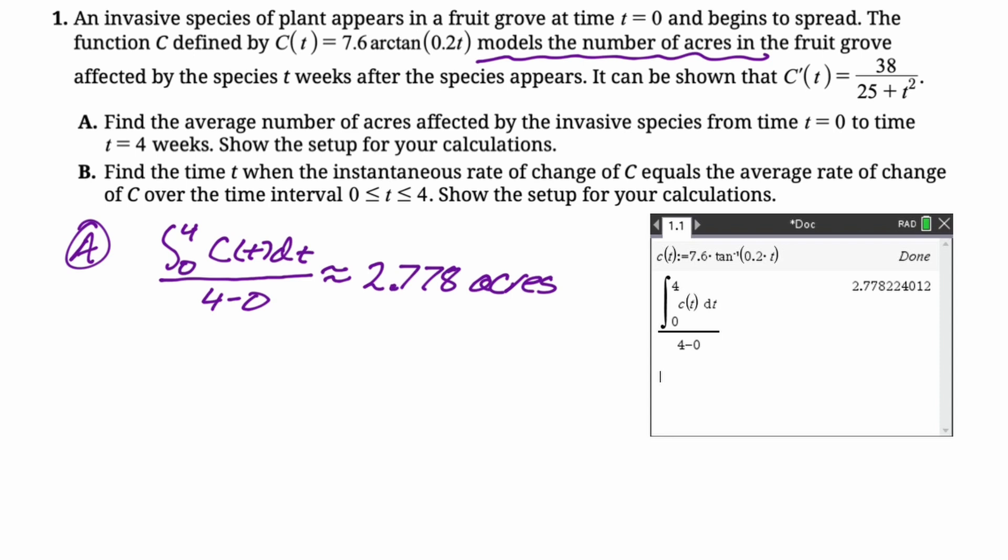Let's look at B. Find the time T when the instantaneous rate of change, that's the derivative, is equal to the average rate of change. That's the algebra 1 slope on the time interval from 0 to 4. Show the setup.